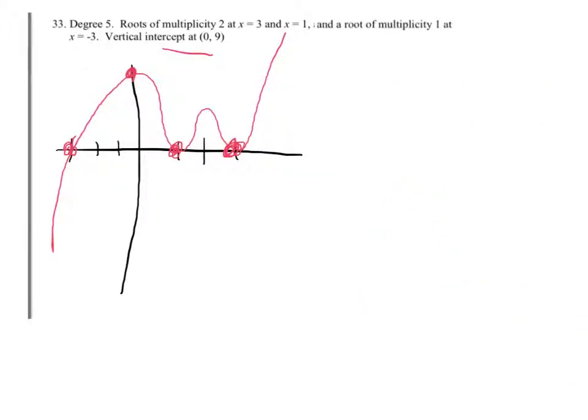So I know that I have x equals 3, x equals 1, x equals negative 3 for solutions. So to get my zeros, I'm just going to write the factors. x plus 3, and that's a single power because it's multiplicity 1. Then x minus 1 squared because it's multiplicity 2, and the same thing for the 3 root, so x minus 3 squared.